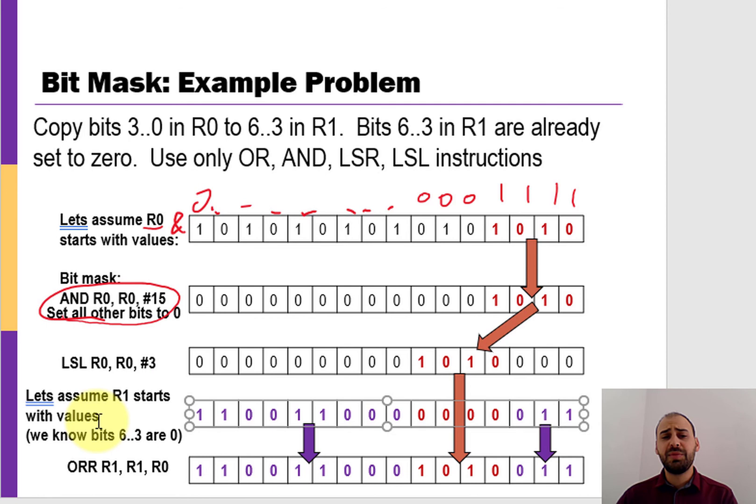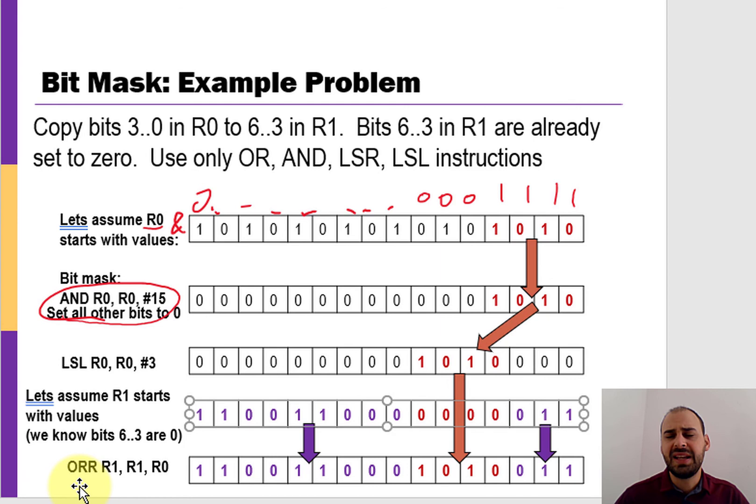So in this video we looked at ARM assembler bitwise operations. Watch it multiple times if you need to — we'll practice in class. We'll also follow up by looking at these operations in the context of C programming, where you can also work with bitwise operations, which will be quite useful. Thanks for watching, feel free to ping me with questions, and I'll see you in class or the next video.